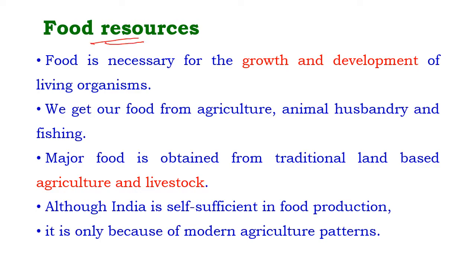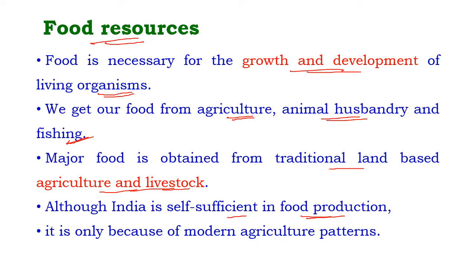Food is necessary for the growth and development of living organisms and human beings. We get our food from agricultural products, animal husbandry products, and by means of fishing. The major food is obtained from traditional land-based agriculture and livestock. Although India is self-sufficient in food production, it is only because of modern agricultural patterns.